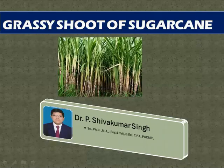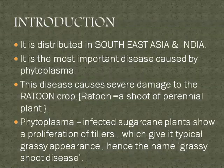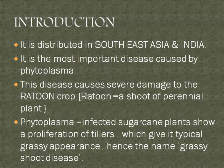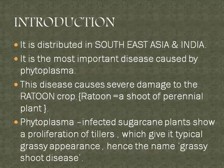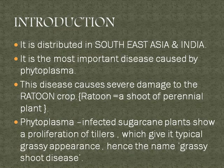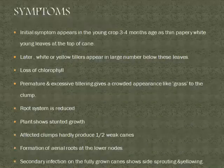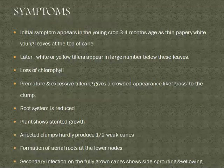Let us start with grassy shoot disease of sugarcane, caused by phytoplasma-like organisms. It is distributed in southeast Asia, particularly in India. This is the most important disease caused by phytoplasma-like organisms and is considered a phytoplasma disease. It causes severe damage to ratoon crops — ratoon meaning a shoot of perennial plants like sugarcane. Phytoplasma-infected sugarcane plants show proliferation of tillers, giving a typical grassy appearance, which is why the name grassy shoot disease has been given.